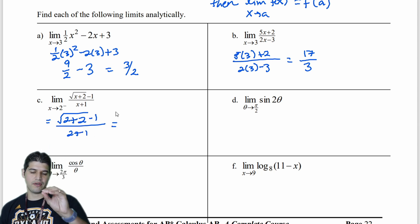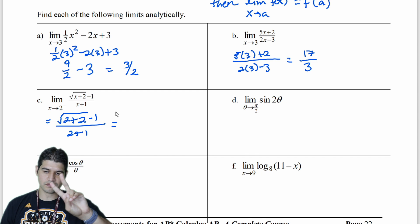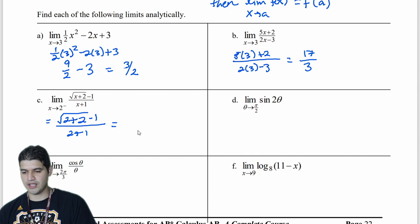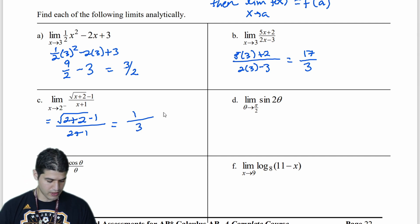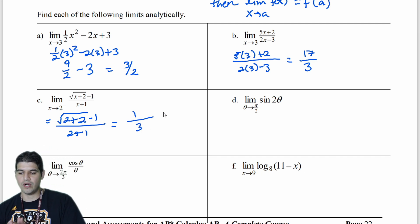So now I get the square root of 2 plus 2 minus 1 over 2 plus 1. So let's see, 2 plus 2, that's 4. Square root of 4 is going to get me 2. 2 minus 1 in the numerator is going to give me 1. And then in the denominator, I have 2 plus 1, which is 3. So now in that one, we have 1 third.